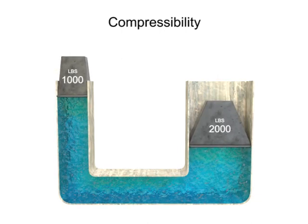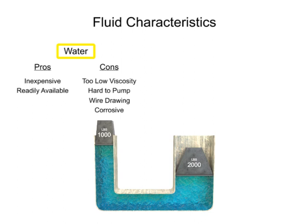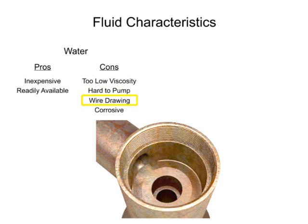Years ago, water was used as the first hydraulic fluid because there was no other liquid available in such large quantities at such a low cost. However, there are some major drawbacks to using water as a working fluid. Due to its low viscosity, it is difficult to pump. Additionally, the speed at which it flows through the system causes an effect known as wire drawing. Wire drawing occurs when the water flow erodes or scores a pathway in the metal of machinery as it goes around corners and through orifices. It also has corrosive effects on metal machinery.